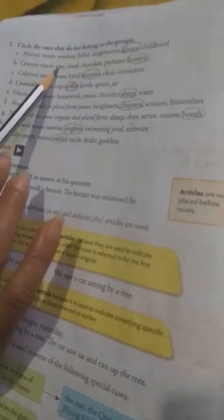Concrete nouns, concrete nouns you can experience through your five sense organs. So, tree, cloud, chocolate, perfume, these all are concrete nouns and bravery is your abstract noun. So, make it circle. Collective nouns. Collective nouns means same kinds of nouns in a group. So, team, band, choir, committee all are collective nouns. Trousers is not your collective noun. So, make it circle. Countable nouns, countable nouns means you can count. Cup, kettle, spoon, jar you can count. Coffee, you cannot count. So, that's why make it circle.